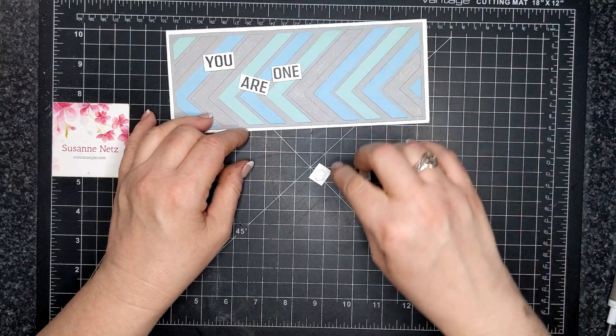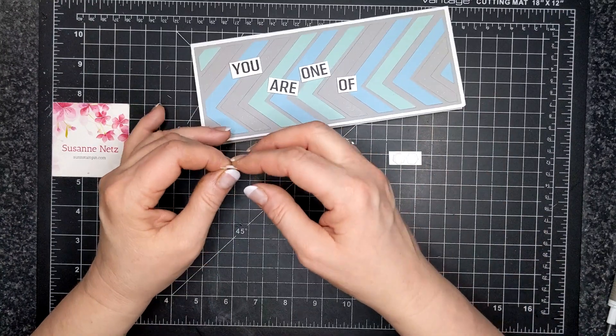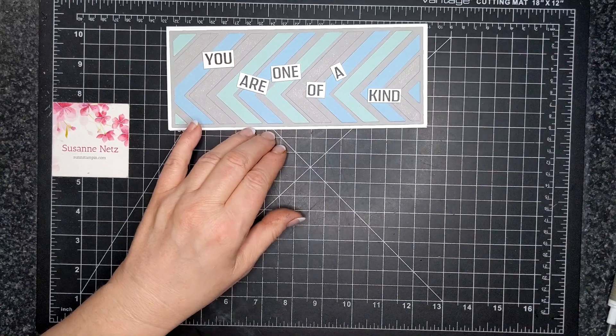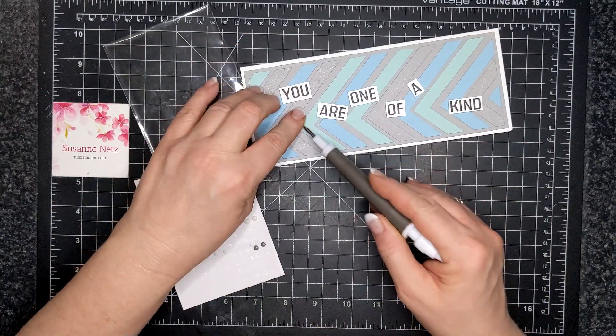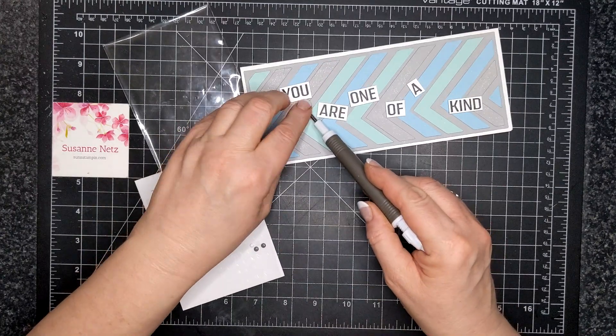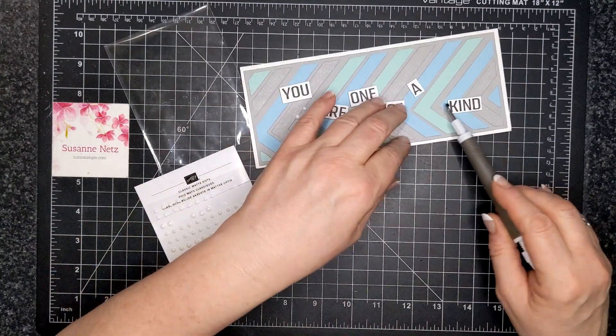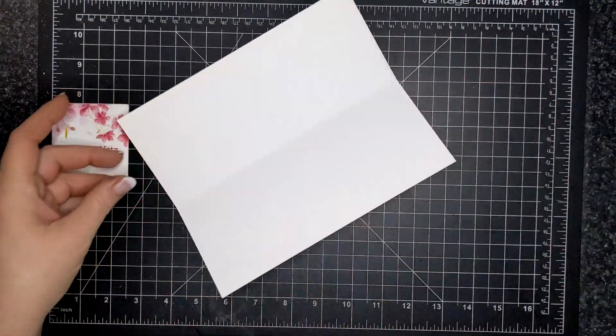So here I put adhesive on the back of my words, all cattywampus. And I used those matte dots for a little bit of embellishment. And then on the inside, my smoky slate ink pad really needs to be re-inked, but it says on the inside, you really are fabulous. So I love that.